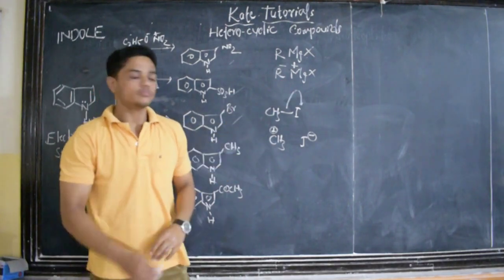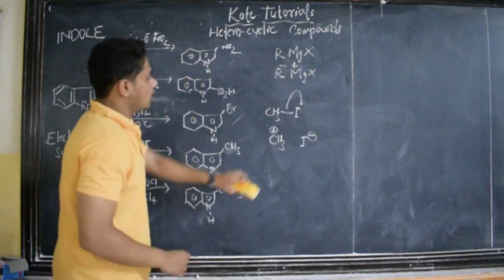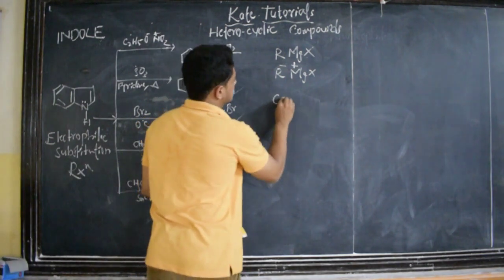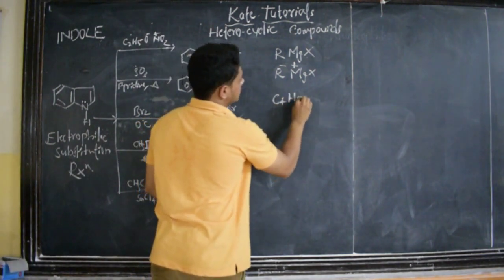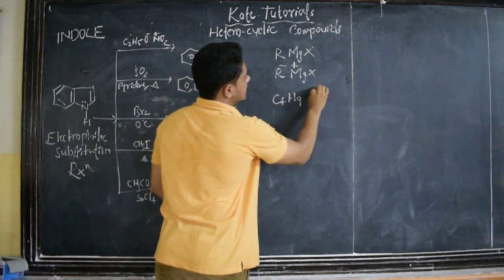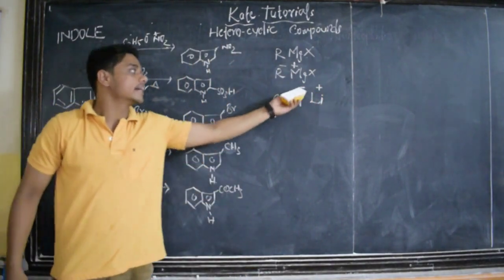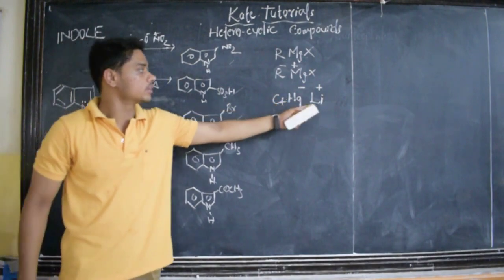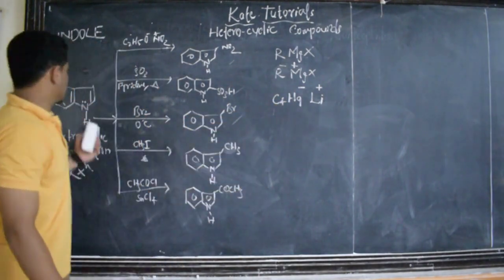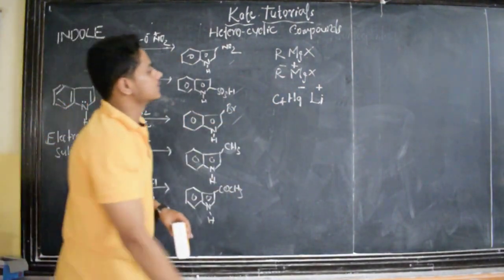For example, if I take C4H9Li, here lithium gets positive charge and this alkyl group, that is n-butyl, gets negative charge. If I treat the same compound with indole, then what happens?